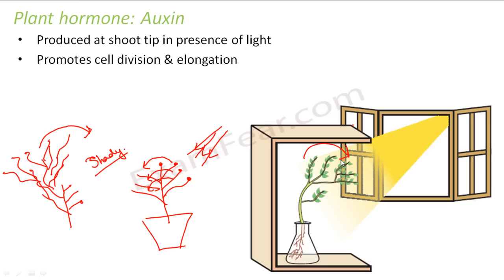So auxins are produced at the shoot tips in the presence of light, they diffuse towards the shady side, more auxins accumulate on the shady side, the plant grows more on that side, and as a result bending happens. This phototropism is observed only in the presence of unidirectional light. If light were coming from both sides equally, the plant would not bend toward any side. The phototropism scenario comes up only in the presence of unidirectional light.